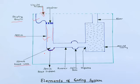The next element of the gating system is the runner. From the sprue base well, metal flows through the runner. Runners are normally made trapezoidal in cross-section. It is general practice for ferrous metals to cut the runners in the cope and the gates in the drag. The main reason for this is to trap the slag and dross, which are lighter and so are trapped in the upper portion of the runners.